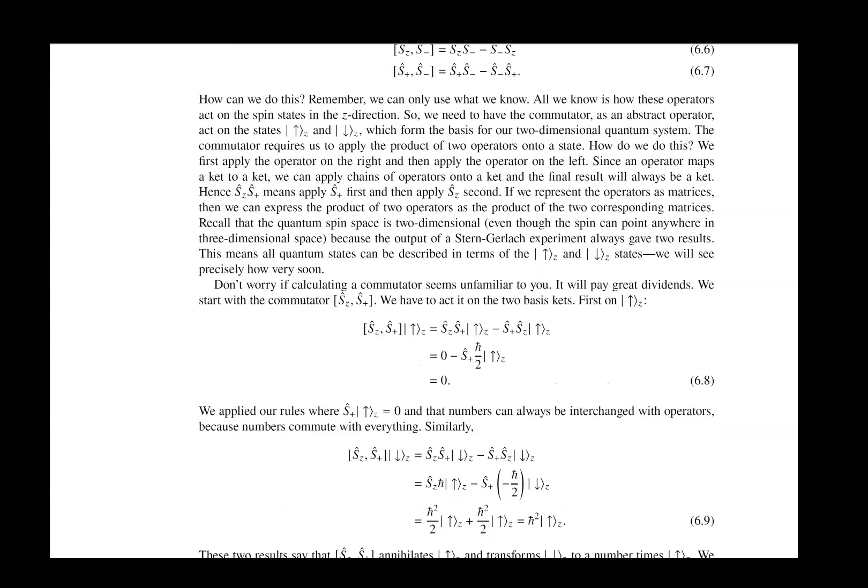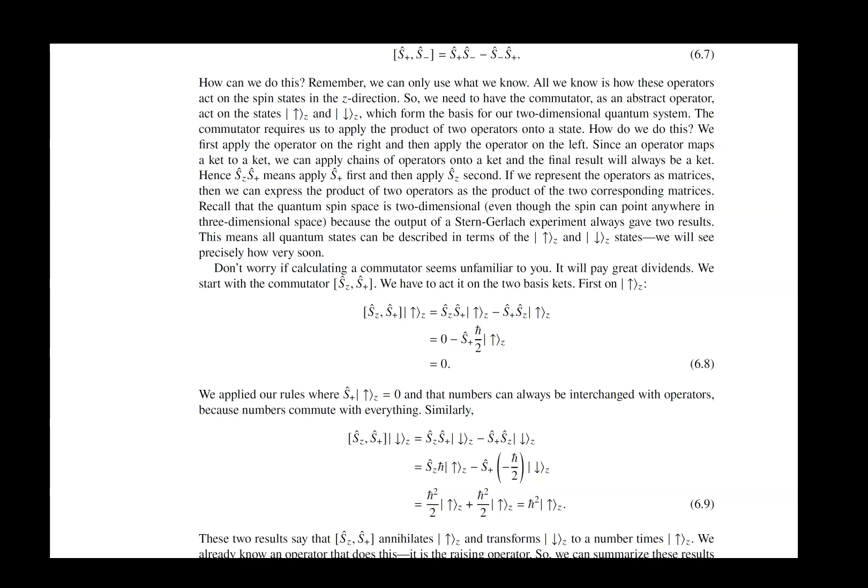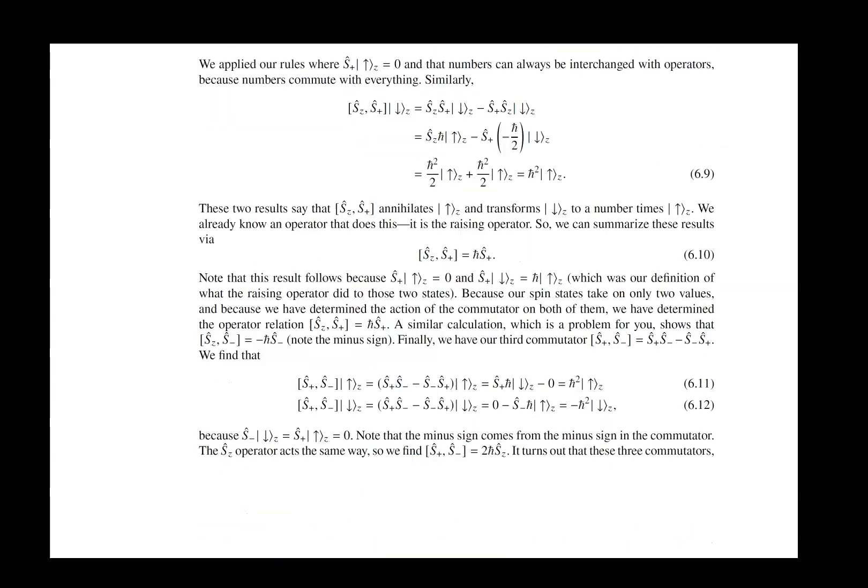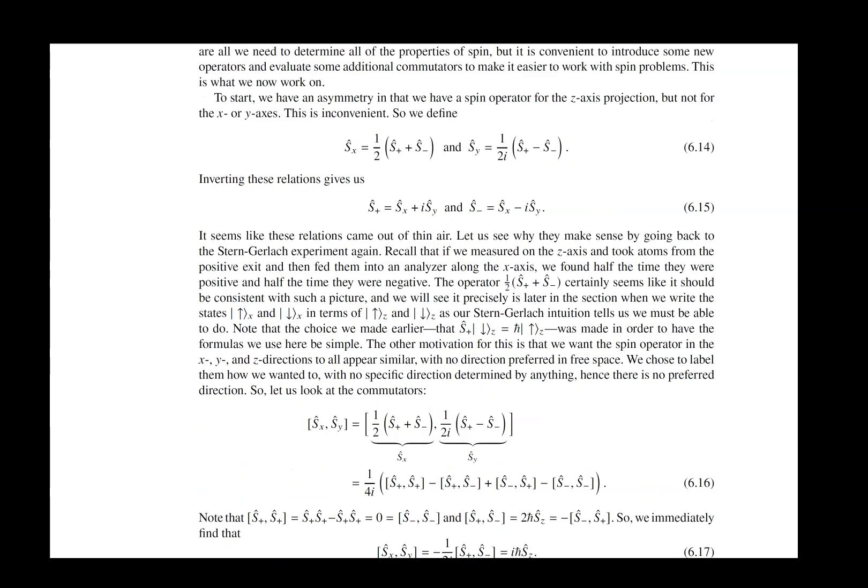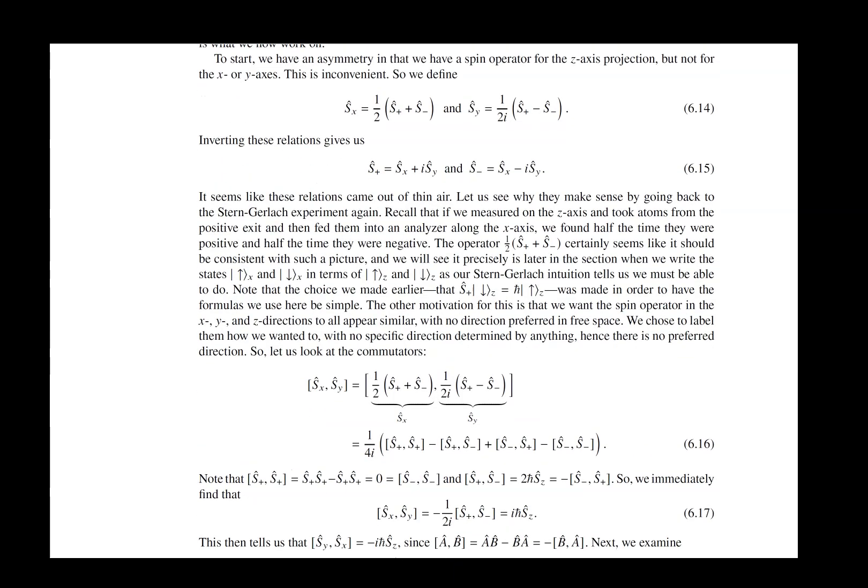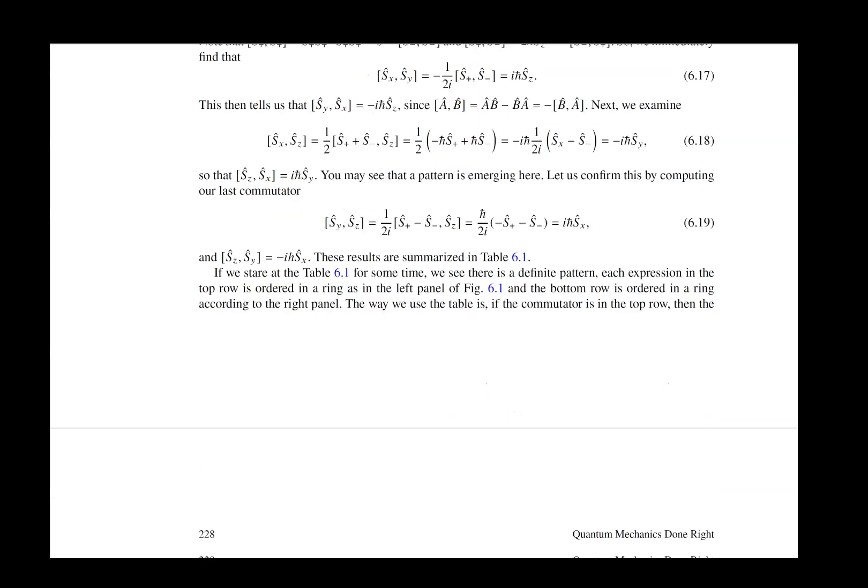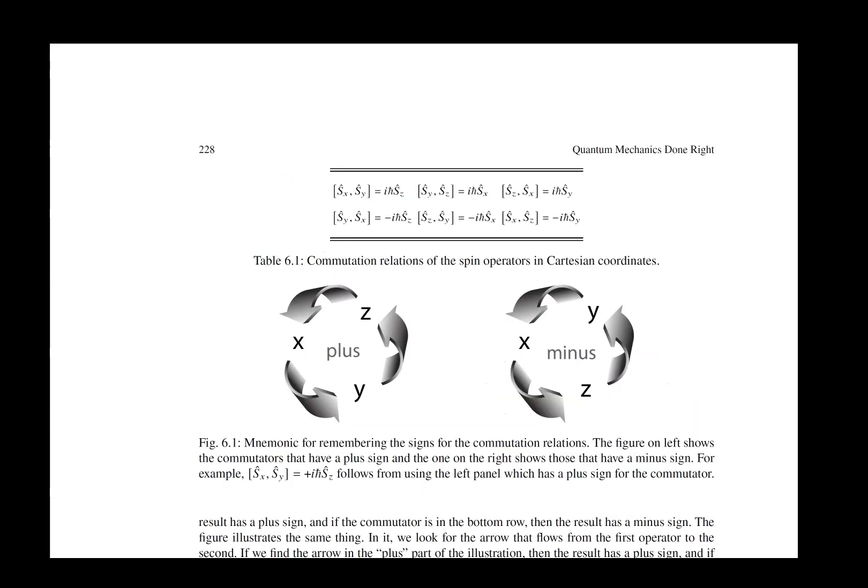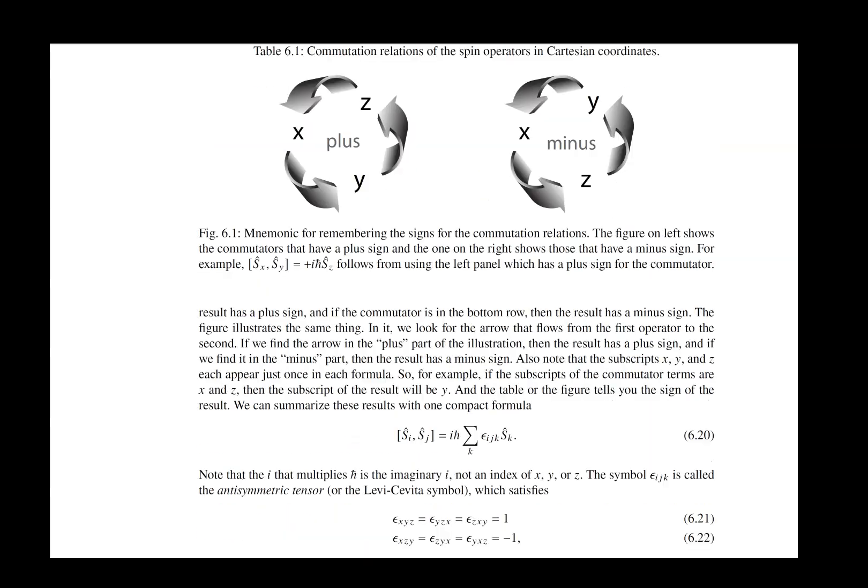And simply from that, we can get the SU2 algebra. And from that, we can then get that we can define what we would call Sx and Sy. And from the Sx and Sy, we then can look at the algebra of the Sx and Sy. And we get a nice mnemonic that tells us what those commutation relations are using a simple ordered mnemonic that is illustrated in this figure.